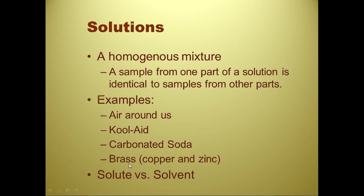Brass, our solid solution example, is mostly made up of copper — so that's the solvent — and the solute is zinc, the thing being dissolved in it. In order to make brass, they have to make it molten to get it to become a good solution, so that one part of the brass sample is exactly identical to another part.